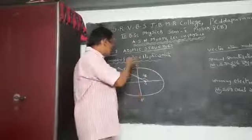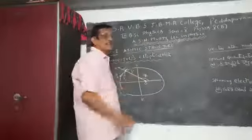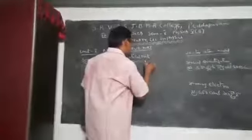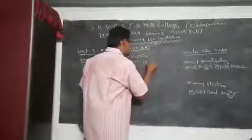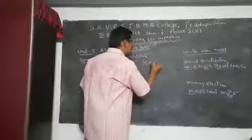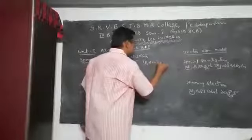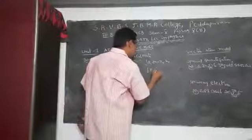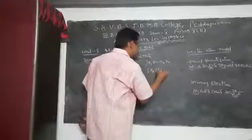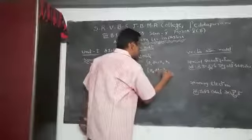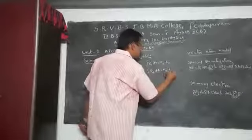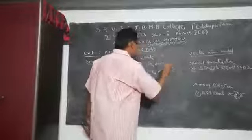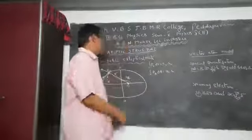And there are two quantum conditions: integral P_r dR is equal to n_r times h, and integral P_φ dφ is equal to K times h.